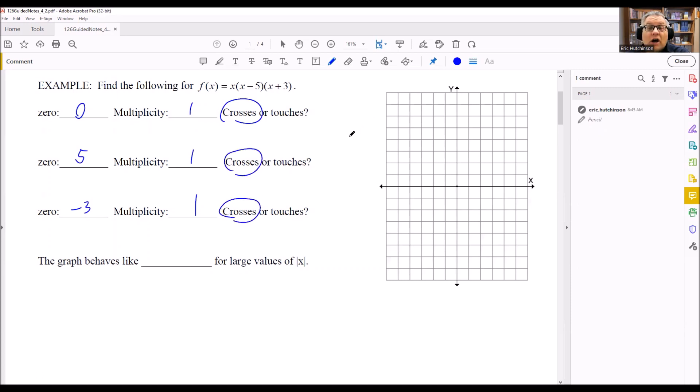So the graph will cross at zero, cross at five, it'll cross at negative three.